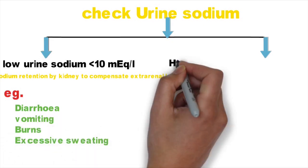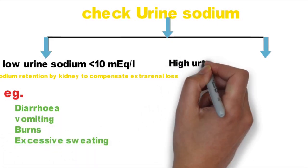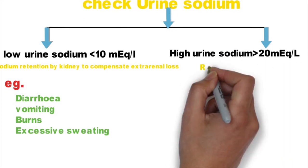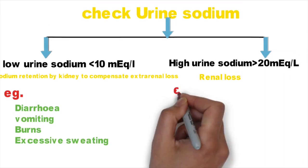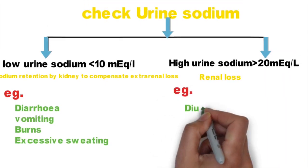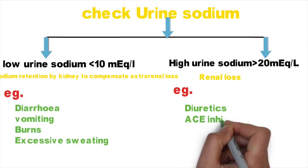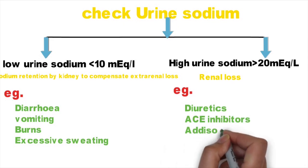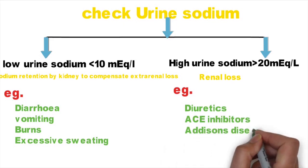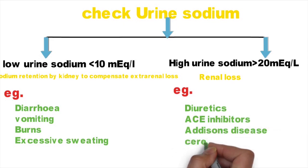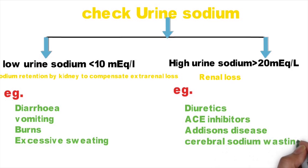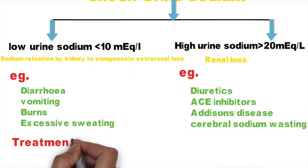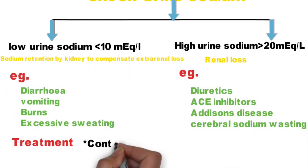Extra-renal sodium loss can be due to diarrhea, vomiting, burns, or excessive sweating. If there is more than 20 milliequivalent per liter of sodium in urine, it can be due to diuretics, ACE inhibitors, renal salt wasting, Addison's disease, or cerebral sodium wasting.